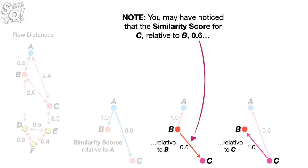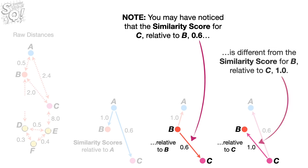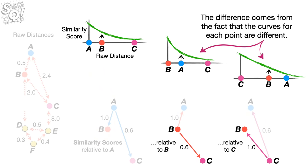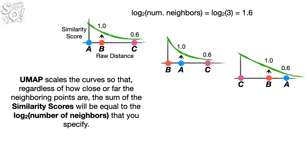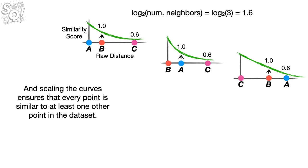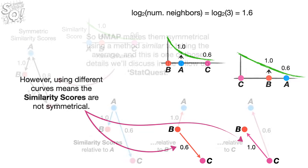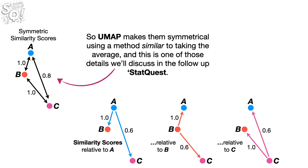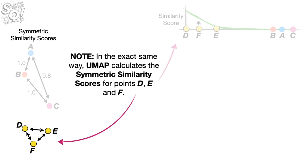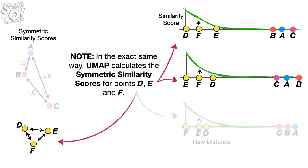You may have noticed that the similarity score for C relative to B (0.6) is different from the similarity score for B relative to C (1.0). The difference comes from the fact that the curves for each point are different. UMAP scales the curve so that, regardless of how close or far the neighboring points are, the sum of similarity scores equals the log base 2 of the number of nearest neighbors specified. This ensures every point is similar to at least one other point. However, using different curves means the similarity scores are not symmetrical, so UMAP makes them symmetrical using a method similar to taking the average — a detail covered in the follow-up StatQuest. In the exact same way, UMAP calculates the similarity scores for points D, E, and F.